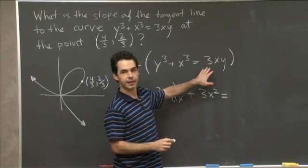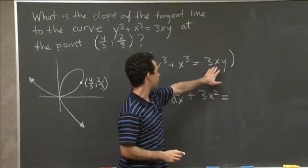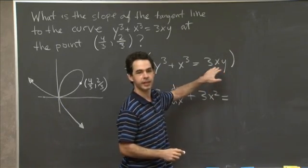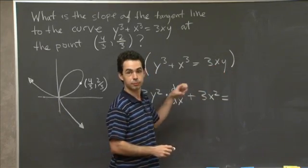OK, so on the right now, what we have, we don't actually have a chain rule. We have a product rule situation here. We have 3 times x times y. So 3 is just a constant, so we could just pull it out in front.